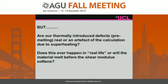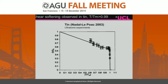Are our thermally activated defects real, or an artifact of the calculation? We are running at temperatures above the real melting temperature of iron at core conditions, so is this just superheating? The short answer is I don't know. But pre-melting shear softening has been observed experimentally in tin, showing the same sort of behavior — so it does happen in real life.